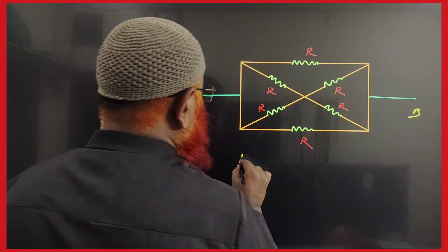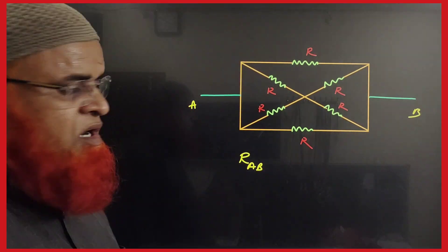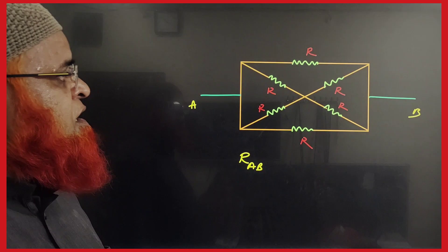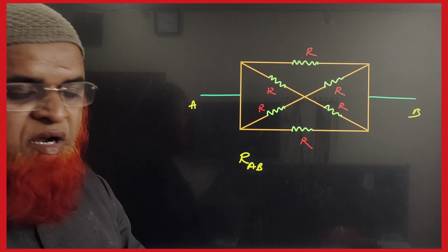This is A and this is D. We need to find out the resistance across A. What type of circuit is this? How can you solve it? Which is series, which is parallel - it's a little bit confusing.